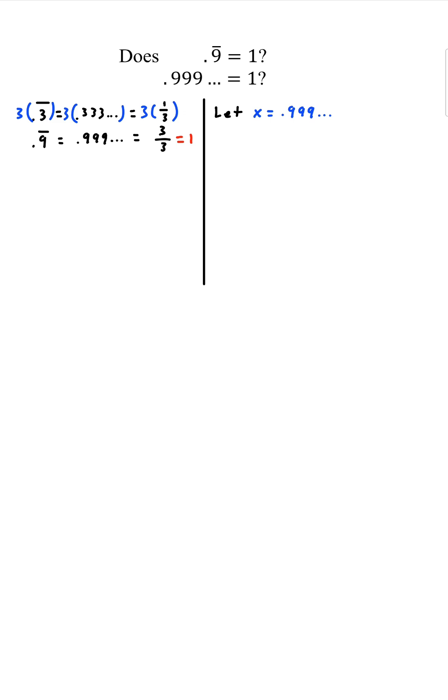So there's one proof. Second proof, let x equal 0.999 repeated. And if we multiply by 10, we get 10x equals 9.999...